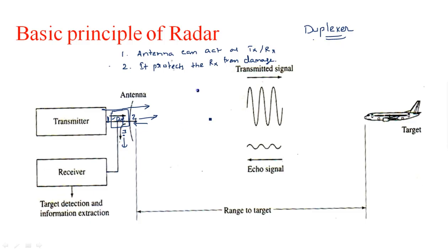How does the duplexer protect the receiver? The transmitting signal carries kilowatts of power, needed to reach the target at long distances. Without a duplexer, some of that high-power signal could leak into the receiver and damage it, because the receiver is designed to be extremely sensitive to detect very weak echo signals — around 10⁻¹³ watts. Such high sensitivity means kilowatts of power would simply destroy it.